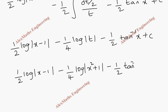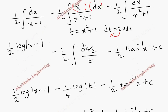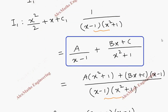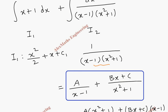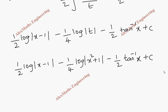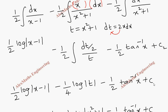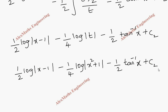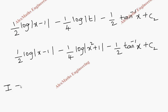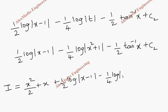The last part, minus one half integral of dx over x squared plus 1, is the direct formula giving minus one half tan inverse x plus C. So the I2 result is one half log mod x minus 1 minus one quarter log mod x squared plus 1 minus one half tan inverse x plus C, where we replaced t with x squared plus 1. Combining with I1, the total answer is: I equals x squared over 2 plus x plus one half log mod x minus 1 minus one quarter log mod x squared plus 1 minus one half tan inverse x plus C.